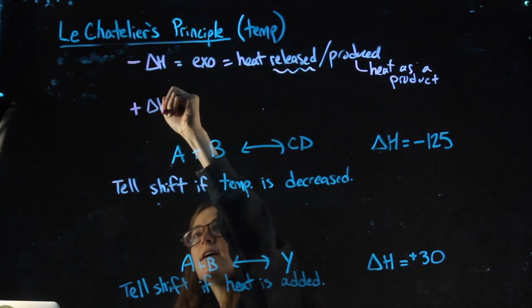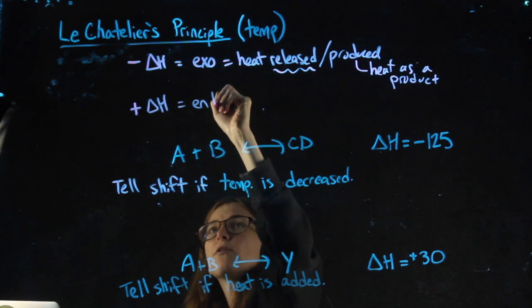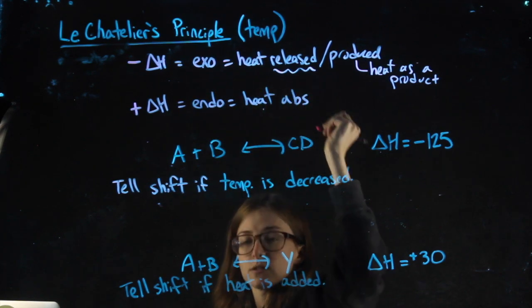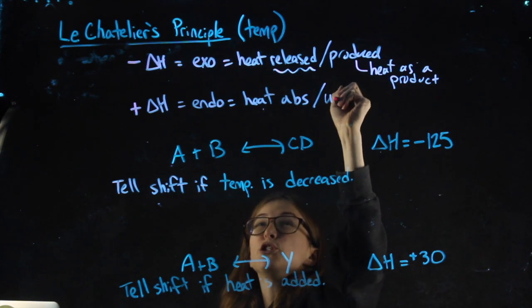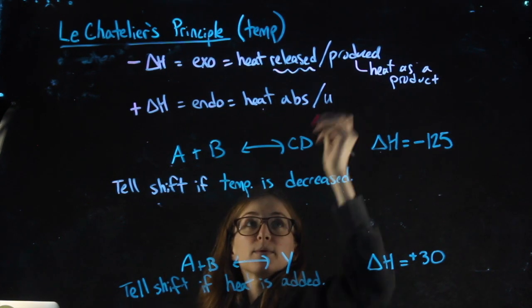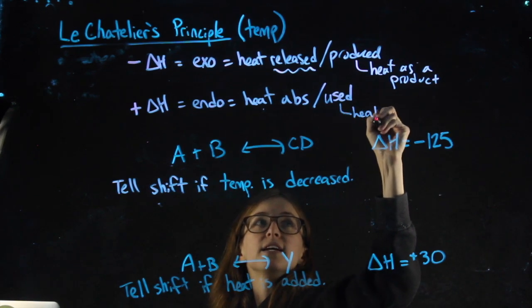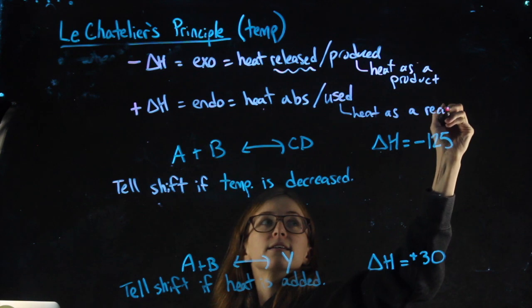Whereas when we have a positive delta H, it is endothermic, heat is absorbed, or we can say that it's used, it's taken in, it's being absorbed and used. We are going to, in that case, think of heat as a reactant.